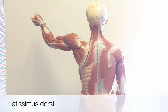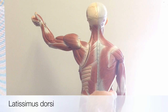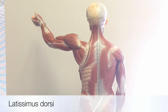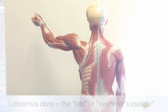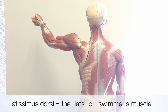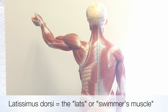The latissimus dorsi is a large and wide muscle located on the inferior portion of the back. Even though it's on the back, it's used to move the arm. You may have heard of it by its nickname, the lats, or the swimmer's muscle because of its actions in swimming movements.